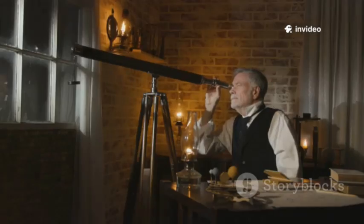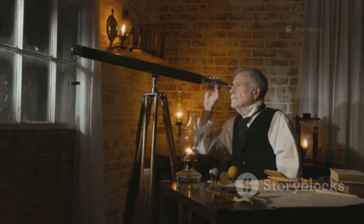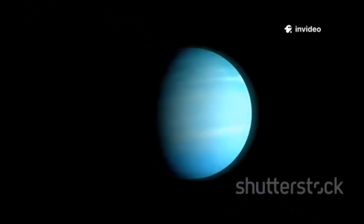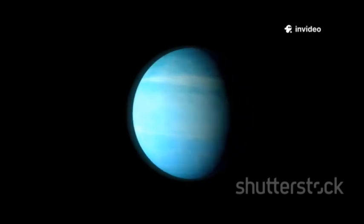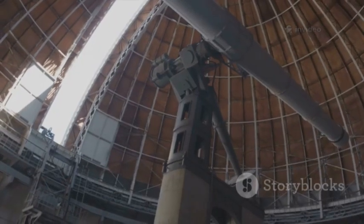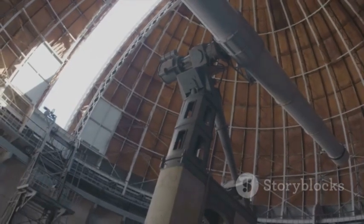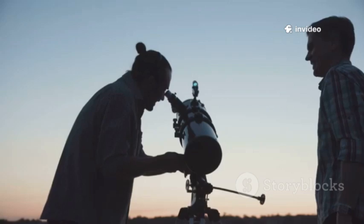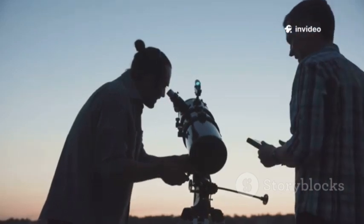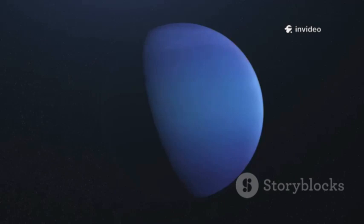French mathematician Urbain Le Verrier, a brilliant mind of the 19th century, took on the challenge. He embarked on a complex series of calculations, using the observed irregularities in Uranus's orbit to pinpoint where this hidden planet should be lurking in the vast expanse of space. On September 23, 1846, armed with Le Verrier's precise coordinates, astronomers at the Berlin Observatory pointed their telescope towards the designated location, and there it was, Neptune, shining faintly in the night sky, exactly where Le Verrier had predicted.